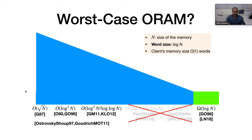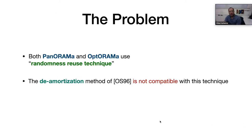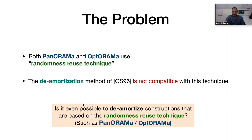Some techniques were previously introduced for de-amortizing ORAM. However, those techniques are not compatible with the recent constructions of Panorama and Optorama. This means that for worst case complexity, we have a relatively large gap between the best known ORAM and the lower bound. Both Panorama and Optorama use what is called the randomness reuse technique. The de-amortization method of Ostrovsky and Shoup is not compatible with this technique. This leads us to the question: is it even possible to de-amortize constructions that are based on the randomness reuse technique, such as Panorama and Optorama?